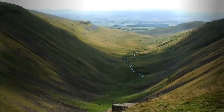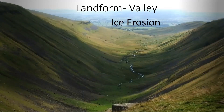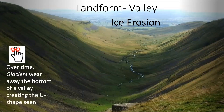What type of landform is this? If you said this is a valley, you are absolutely correct. Now I would like for you to think: what created this valley? How was this formed? If you said by ice erosion, you are right on the money. Remember that over time, glaciers wear away the bottom of a valley, creating a U-shape, which is seen here.